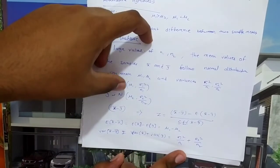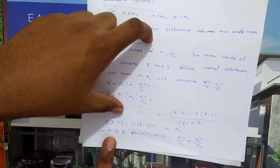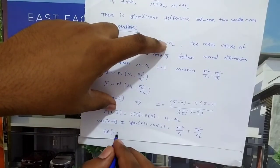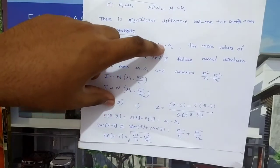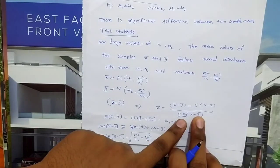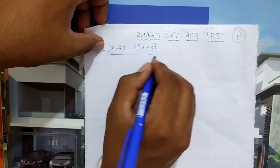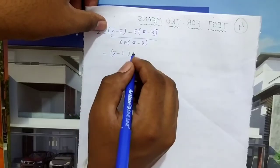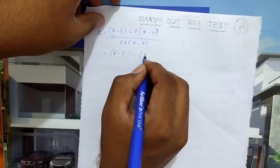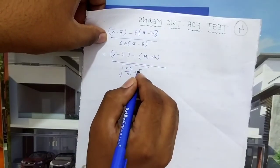Variance of x bar is sigma1 square by n1 plus variance of y bar is sigma2 square by n2. So the standard error of (x bar minus y bar) is the square root of (sigma1 square by n1 plus sigma2 square by n2). Thus Z = (x bar minus y bar minus (mu1 minus mu2)) divided by square root of (sigma1 square by n1 plus sigma2 square by n2).